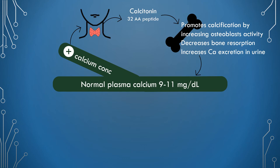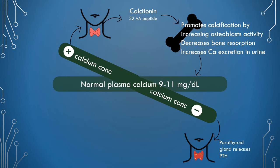When plasma calcium concentration falls below the normal level, it is a trigger for parathyroid hormone to be secreted. Parathyroid hormone is secreted by two pairs of parathyroid glands closely associated with the thyroid glands. It is a single-chain polypeptide containing 84 amino acids. Parathyroid hormone binds to a membrane receptor protein on the target cell and activates adenylyl cyclase to liberate cyclic AMP, which in turn produces various mechanisms to elevate the plasma concentration of calcium.